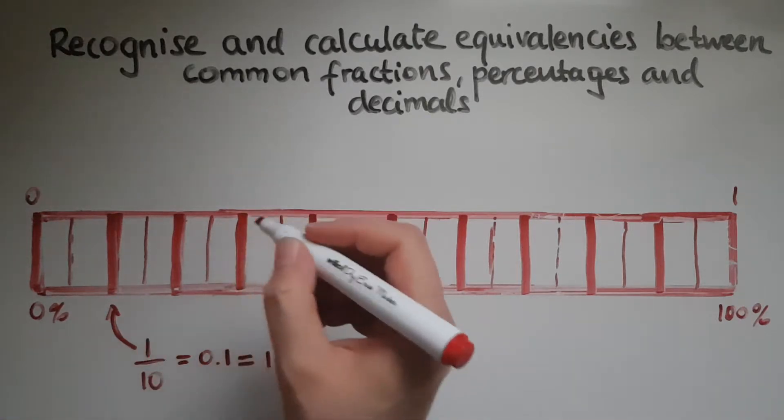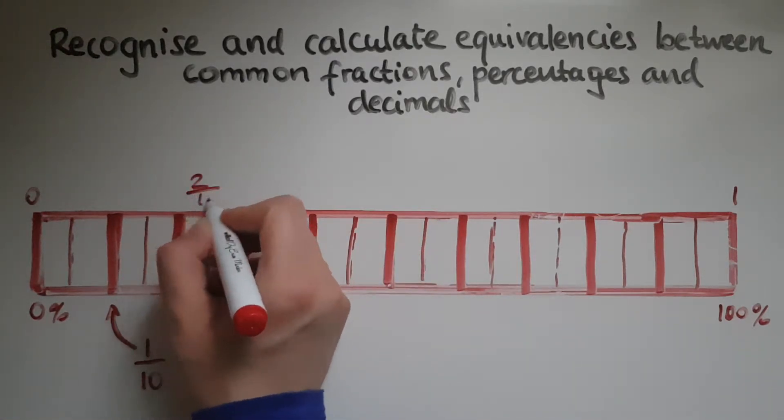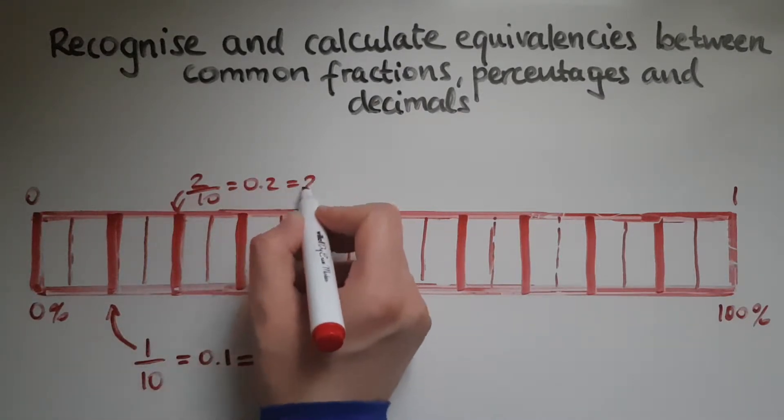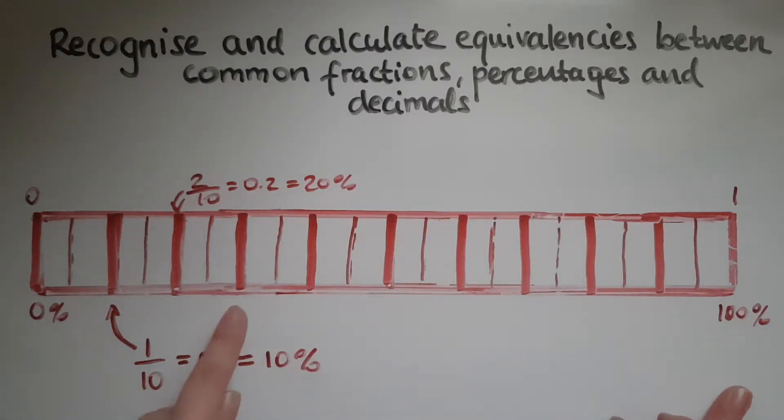Now let's have a look at this one here. This is going to be 2 out of 10, and it's going to be 0.2 and also 20%. So you can see the pattern. This would be 3 out of 10, that would be 0.3, 30%. This would be 4 out of 10, 40% or 0.4. This would be 5 out of 10 or half.